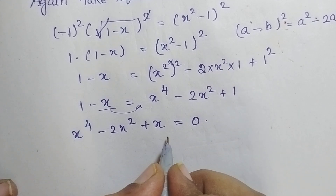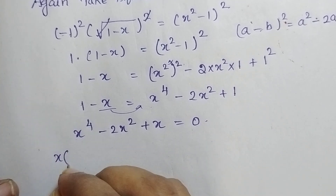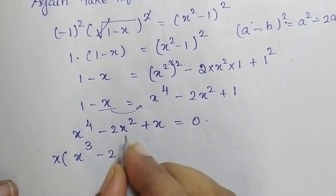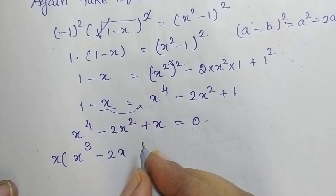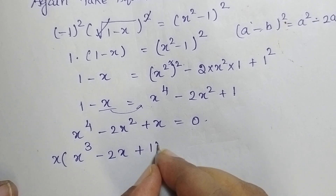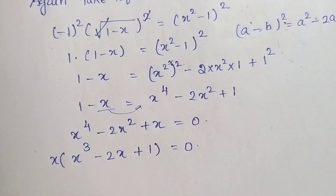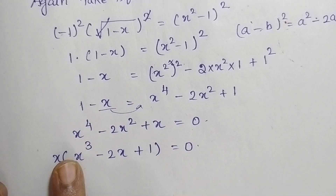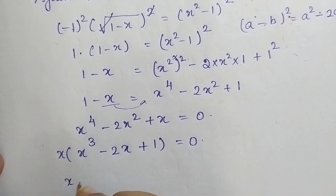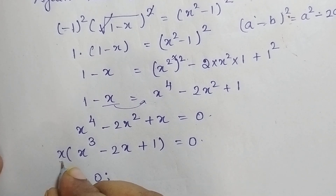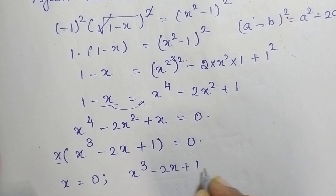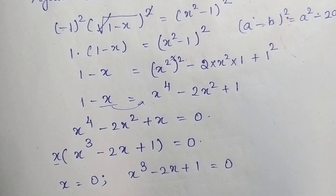Now if you see here, x is common in all the terms. So if I take x out, we get x(x³ - 2x + 1) = 0. So equating individually, from this we can conclude x is equal to 0. And the remaining equation is x³ - 2x + 1 = 0.